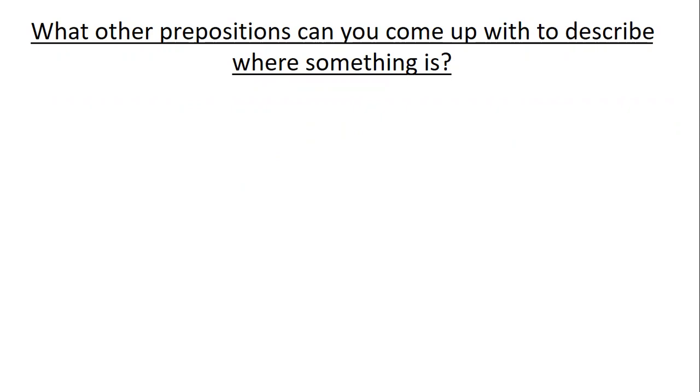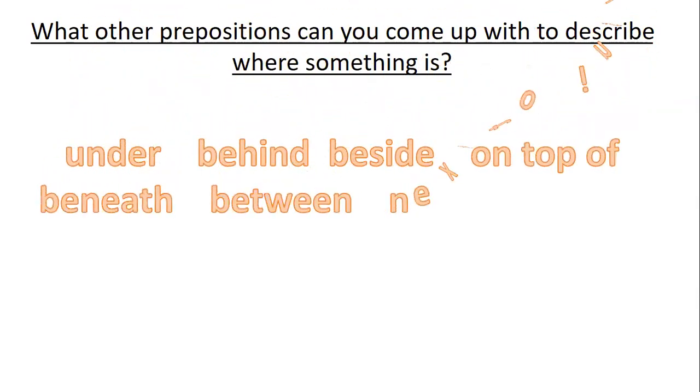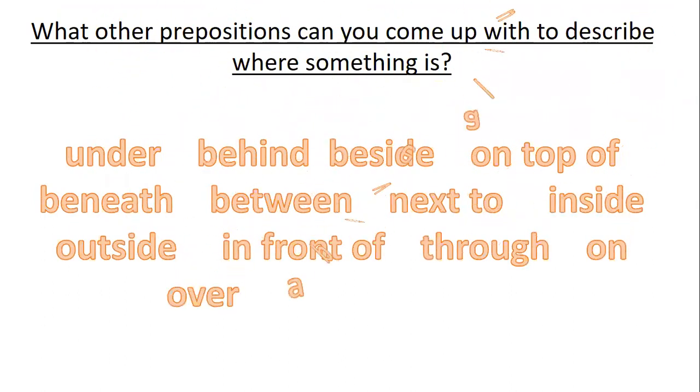Okay, so there's quite a few. I may not have got all of them because there are lots, but here's some which come up. So we've got under, behind, beside, on top of, beneath, between, next to, inside, outside, in front of, through, on, over, above, along. So all of these things can be used to show where something is. So if you do get stuck today, come back to this slide or come back to the ones you've jotted down because they're going to be your prepositions which you can use to create prepositional phrases with.